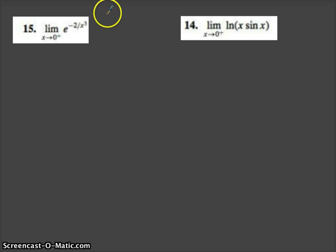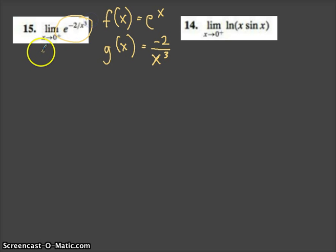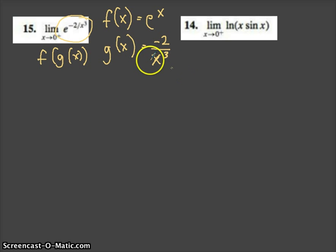We can think of f(x), the main function, as e to the x. The input for x is another function: negative 2 over x cubed. So really, this is f of g of x. We want to find the limit of this function in a very structured way as x approaches 0 from the right.